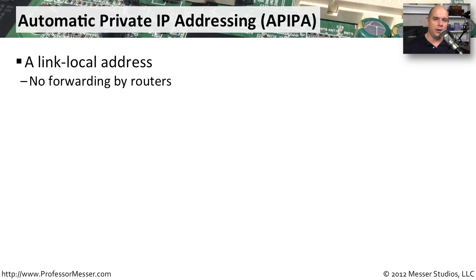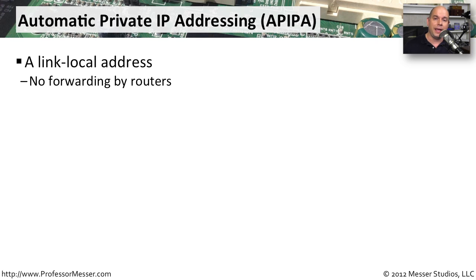Have you ever plugged into a network and not been given an IP address by a DHCP server? In those cases, your operating system assigns a link local address. In IPv4, this is commonly called Automatic Private IP Addressing, or APIPA. Although we're not able to route outside of our network with this locally assigned address, you are able to communicate on your local link to other devices on your local subnet — thus, we call it a link local address.